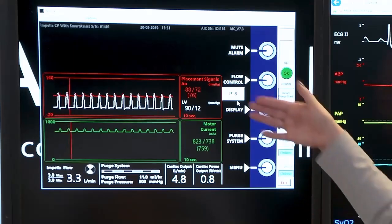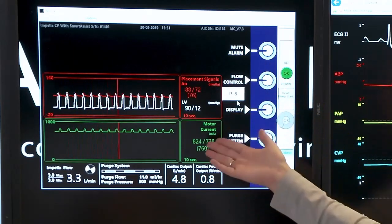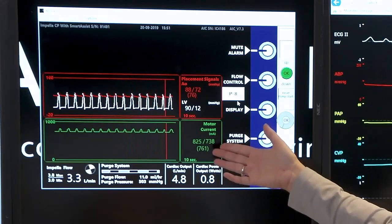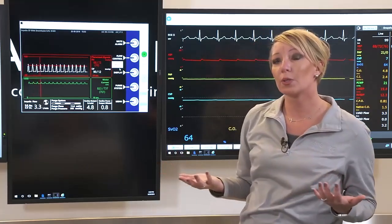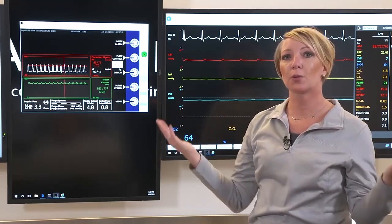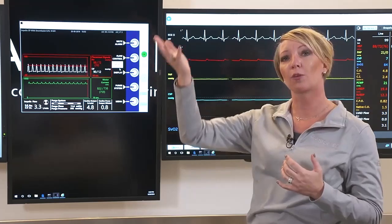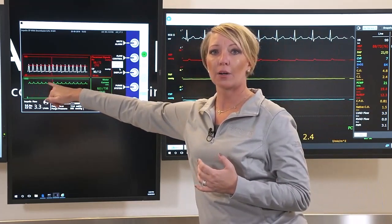As we look at the waveforms that we see on the placement screen, you'll notice that we have a green waveform, which is our motor current. The motor current is going to help with identifying positioning of our device. So what is motor current? Motor current is essentially looking at the amount of energy and flow through the cannula. So when the valve is open, I have more energy, more flow, which will be reflective of the peak on our motor current.